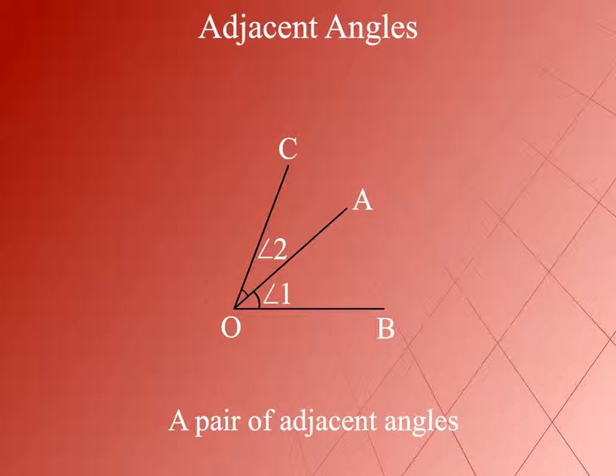Two angles with a common vertex and a common arm between the remaining two uncommon arms are called adjacent angles.